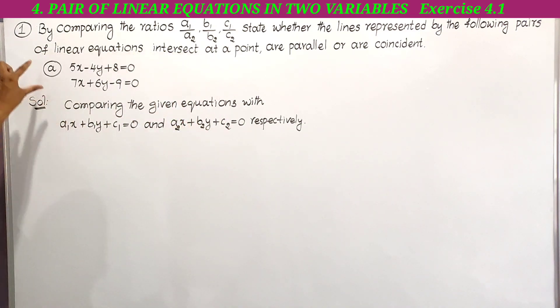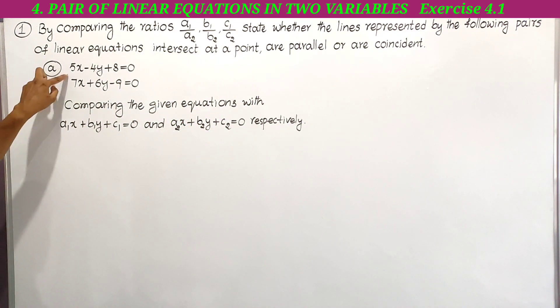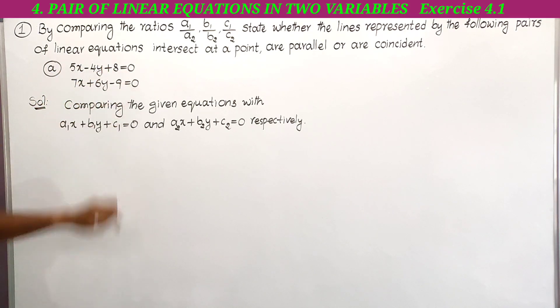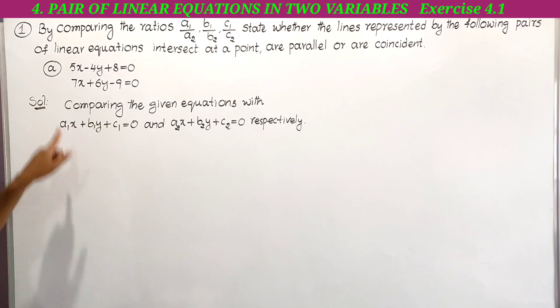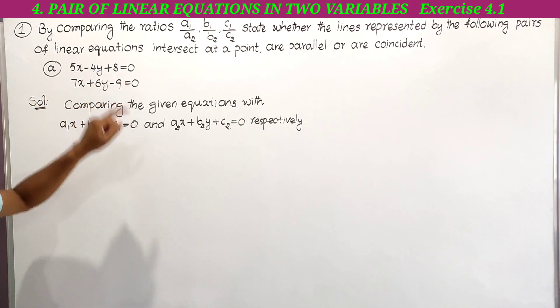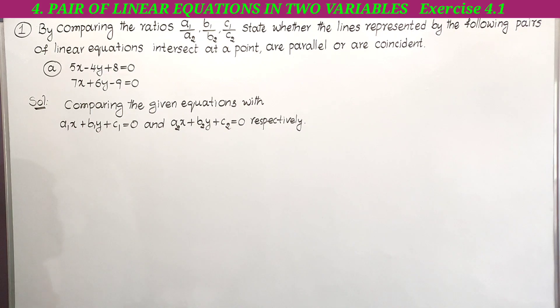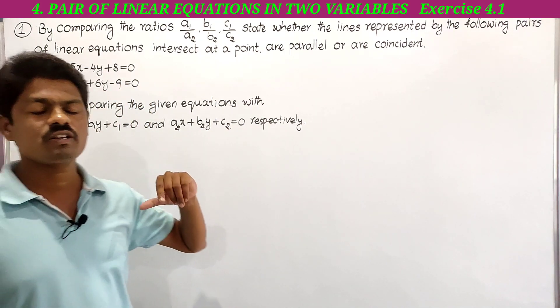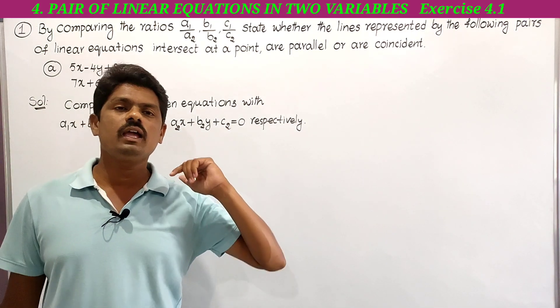So these two are the given equations in part (a). First equation: 5x minus 4y plus 8 equal to 0. Second equation: 7x plus 6y minus 9 equal to 0. Totally there are three parts a, b, and c. This is the first one, part (a).